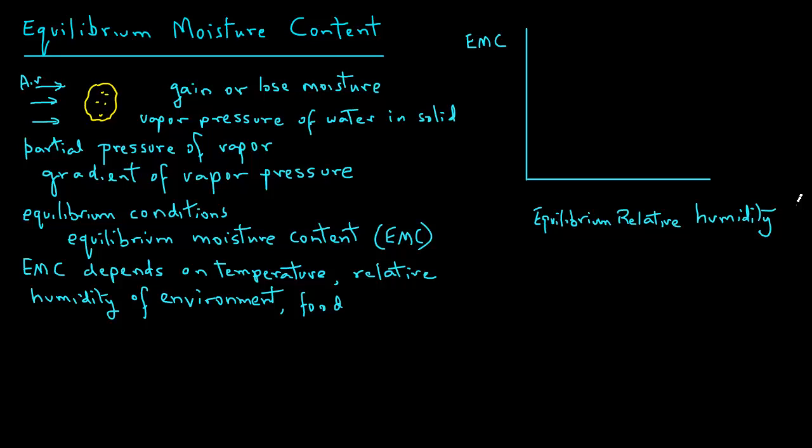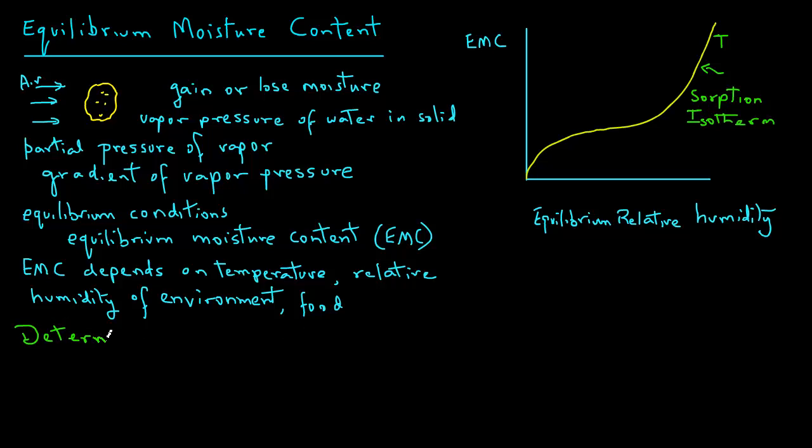When we obtain data on equilibrium moisture content at various equilibrium relative humidities, we get a curve. This curve is called the sorption isotherm. We call it an isotherm because it's obtained at one constant temperature. Let's briefly look at how we determine sorption isotherms.